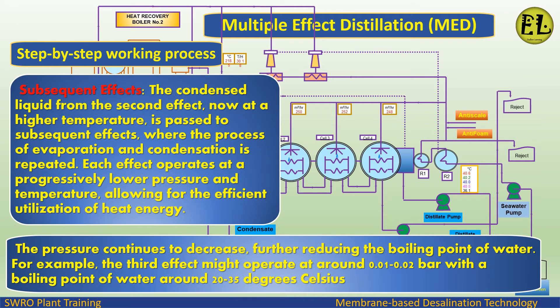Subsequent Effects: The condensed liquid from the second effect, now at a higher temperature, is passed to subsequent effects, where the process of evaporation and condensation is repeated. Each effect operates at a progressively lower pressure and temperature, allowing for efficient utilization of heat energy. For example, the third effect might operate at around 0.01 to 0.02 bar with a boiling point of 20 to 35 degrees Celsius.